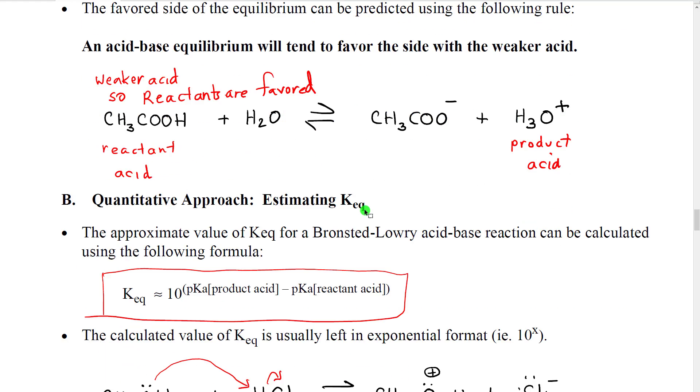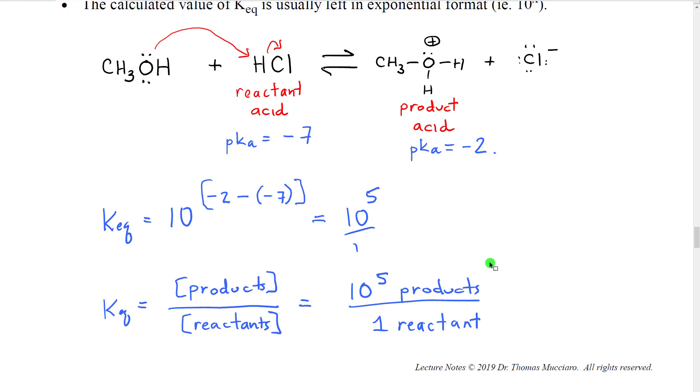Okay, so now we have those two numbers. So now what we're going to do is just very simple math. K equilibrium is going to be equal to 10 raised to the power of pKa of the product acid, which is negative 2, minus the pKa of the reactant acid. And notice that what we're going to be doing is subtracting a negative number. That means we add 7 to negative 2, and we get positive 5. 10 to the positive 5th.